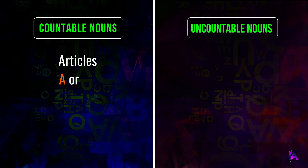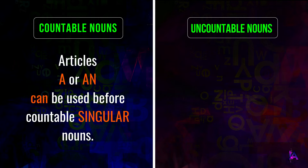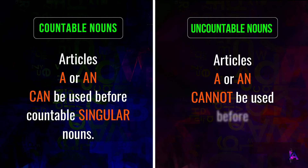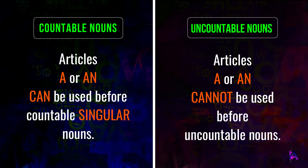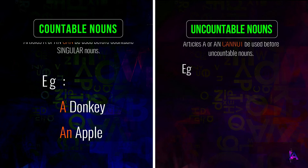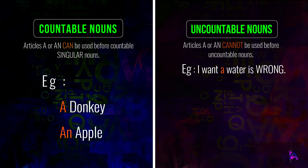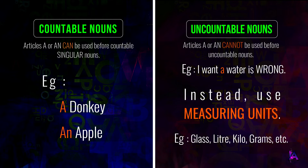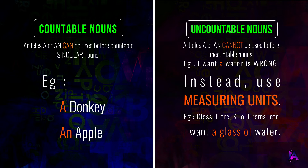Third, the article a or an can be used before countable singular nouns — a donkey, an apple. However, a and an can't be used with uncountable nouns. 'I want a water' is not right. Instead, you can use measuring units like glass, litre, kilo or grams, etc. For example, I want a glass of water, or give me two kilos of rice.